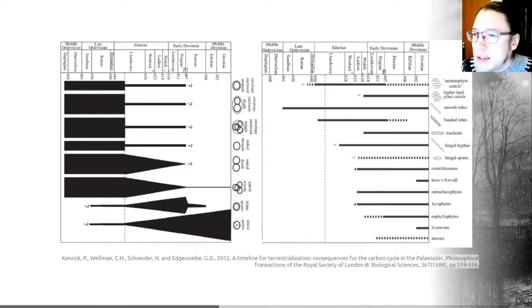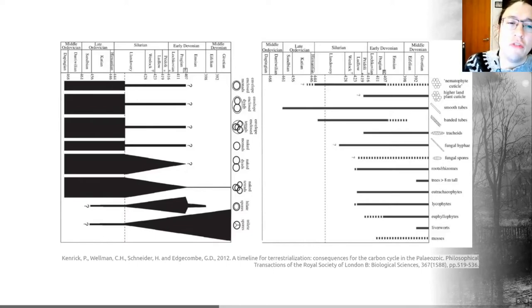In comparison to these bits of plants, in terms of land plant spores we actually have a really excellent fossil record. These are structures that are produced in prodigious numbers and they can be transported for vast distances into a variety of different sedimentary environments.